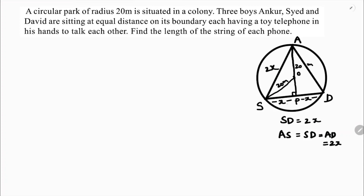Now I need to find X, so let OP equal Y. In a circle, if the triangle is equilateral, O will be the centroid. The centroid divides the median AP in the ratio 2:1. Since AO is 20, OP equals Y equals 10. You can also use the Pythagorean theorem with two right-angle triangles: triangle APS and triangle OPS.